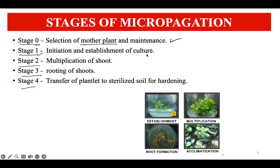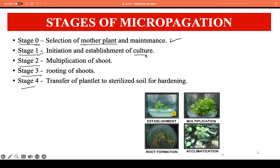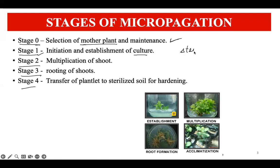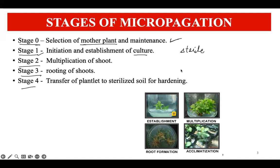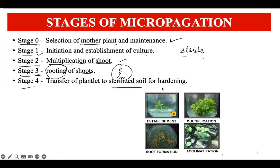Stage one involves establishing the culture by initiating it. Here the explants are placed on a sterile medium to eliminate any kind of contamination, as contamination will hamper growth and the result will not be achieved — so aseptic conditions are very important. Stage two involves shoot development, where shoots multiply on the sterile culture. In stage three, these shoots start to form roots as well. After roots have been formed, a plantlet is developed with both roots and shoots, and this plantlet is then transferred to sterile soil for the hardening process.